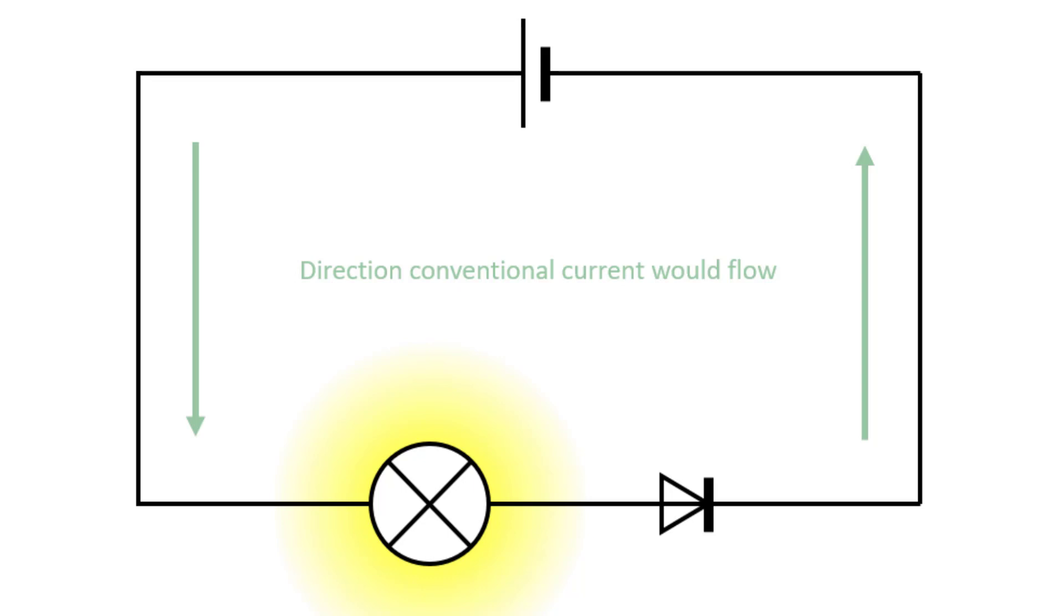The diode acts as if it has zero resistance facing in one direction and infinite resistance facing in the other. In fact, the resistance of the diode changes in a slightly more subtle way, which we'll look at in part two.